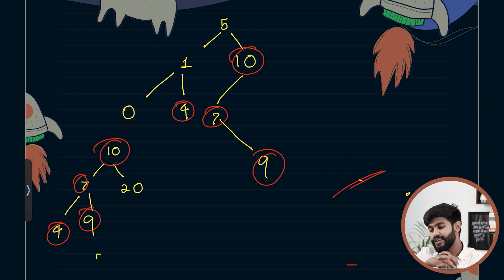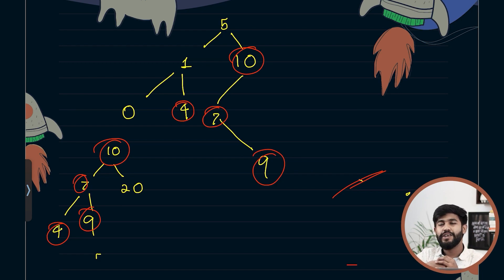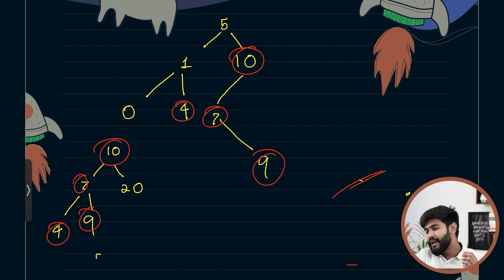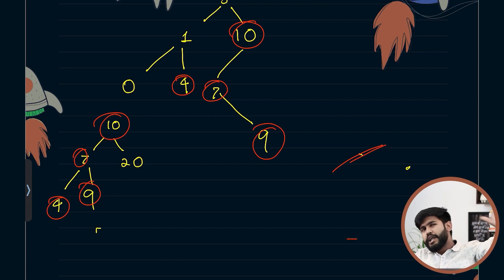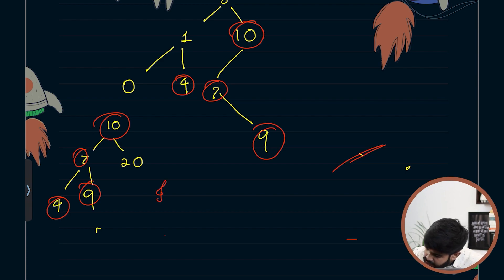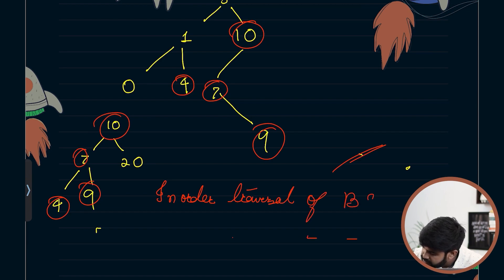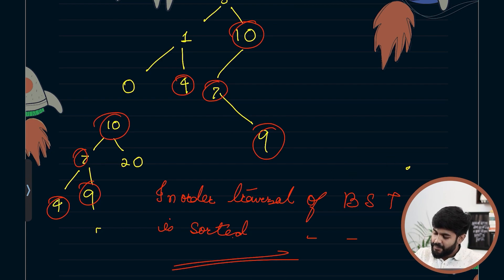Notice that the common nodes are not in the same positions in both trees, so finding them directly is a bit tricky. But remember one key property: the in-order traversal of a BST is always sorted. I'd say roughly 70% of BST problem solutions are based on this fact.